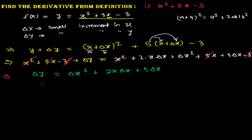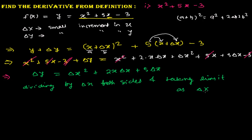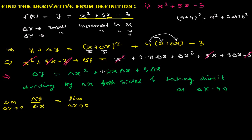Now I will divide both the left-hand side and the right-hand side by Δx, and take the limit as Δx tends to zero. So we write: lim(Δx→0) of Δy/Δx = lim(Δx→0) of [(Δx)² + 2x·Δx + 5Δx] / Δx.